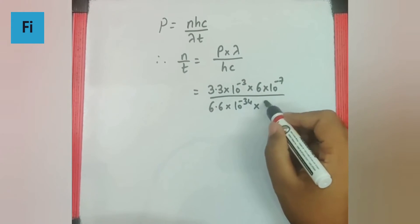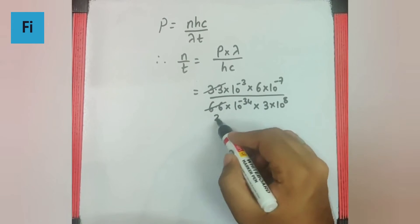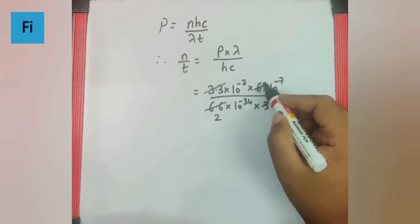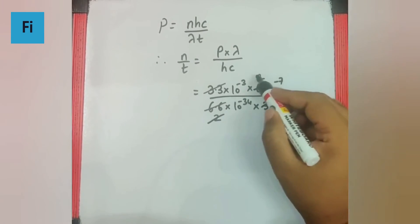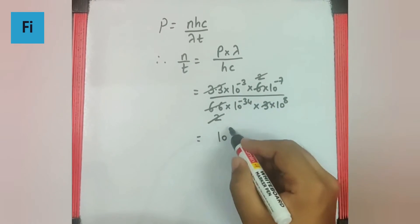And c, that is speed of light, we know it is 3 × 10^8. So 3.3 × 2 is 6.6, 3 × 2 is 6, 2 gets cancelled, so we get 10^-34 goes